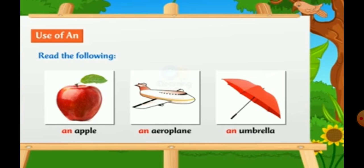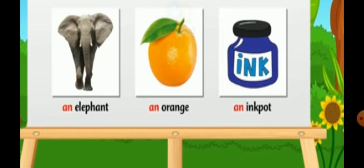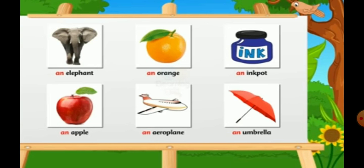An apple, an aeroplane, an umbrella, an elephant, an orange, an ink pot. As you can see, elephant, orange, ink pot, apple, aeroplane, and umbrella all start with a vowel sound. So AN is used in front of them.